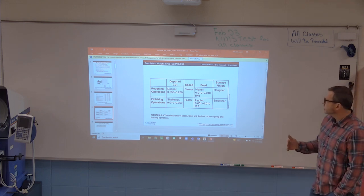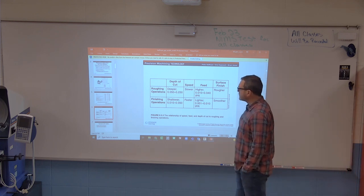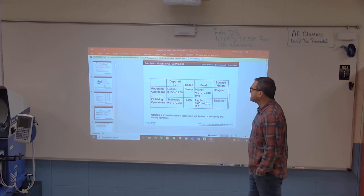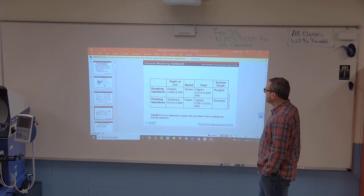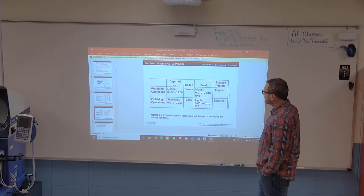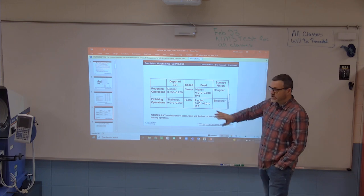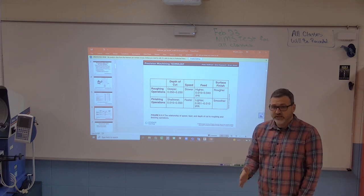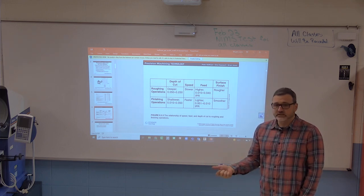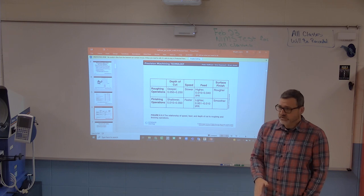Here are general rules of thumb. Roughing operations, depth of cut anywhere from 50,000ths to 250,000ths, feed rate of 10,000ths to 40,000ths per revolution, or inches per revolution. Roughing gives you that rougher surface finish. On our lathes, generally, if you pick a roughing feed rate of about 15, and then when you switch from A to B, it cuts it in half. So that automatically makes your finished feed rate. Roughing 15, finish at 7. Roughing 20, finish at 10.